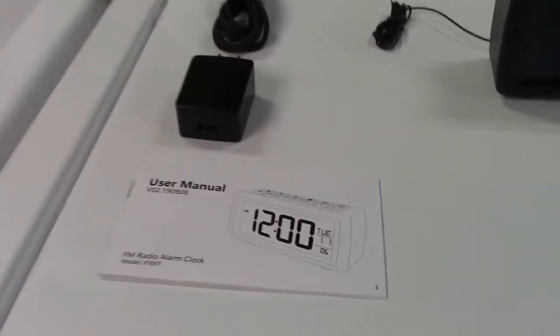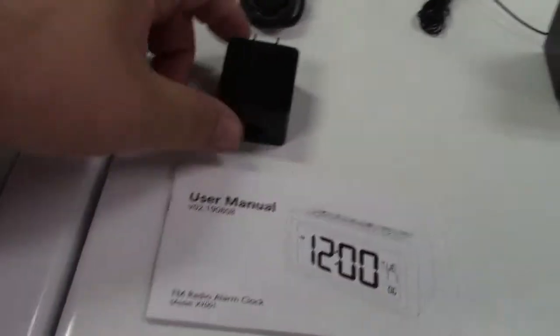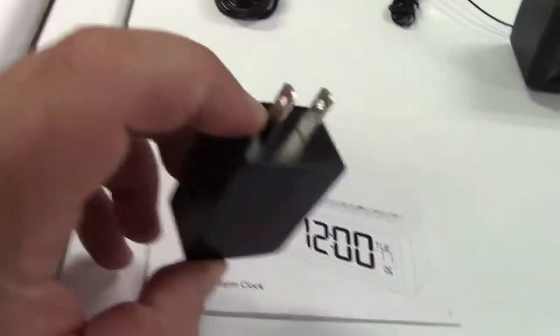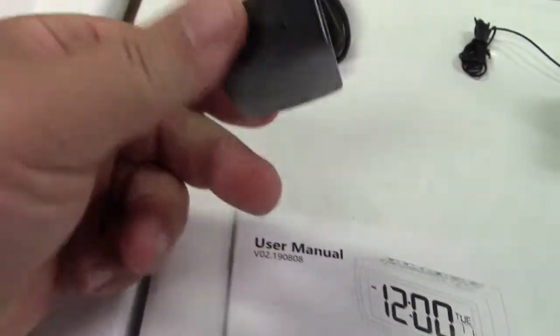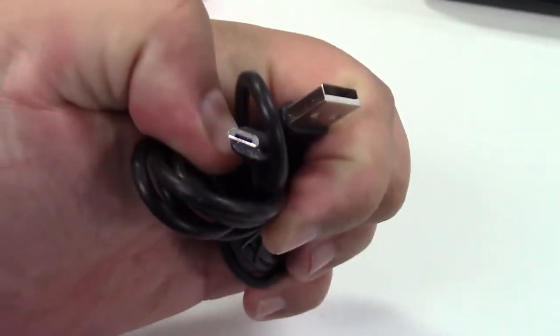In the box you get an instruction booklet, you get a USB charger like you would have for your phone. It plugs in, gives you a USB. They include a USB cable, which is USB to micro USB, and of course you get the clock itself.